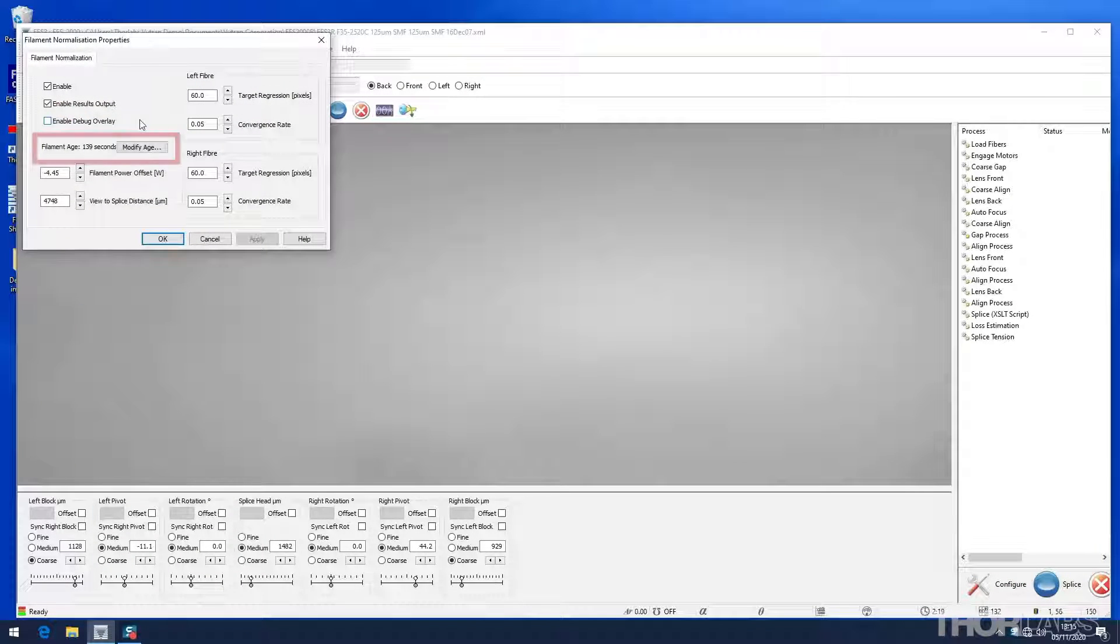If you remove a filament before its end of life, record the filament age, filament power offset and view to splice distance. When you next install this filament, these parameters can be input as a starting point to expedite normalization, though it is typical for the values to change.